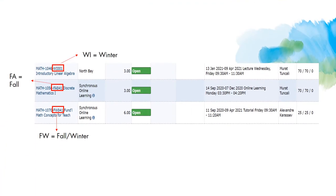There will be another video assisting you with WebAdvisor, but for now let's take a quick look so you know how to tell if a course is available in the Fall or the Winter. Here is a quick screenshot of some of the math offerings in WebAdvisor. Course codes are followed by two letters indicating what term the course will be offered in: FA, meaning the course runs from September to December; WI, meaning the course runs from January to April; and FW, meaning the course runs from September to April, or all school year.